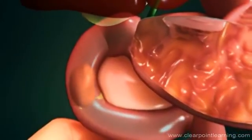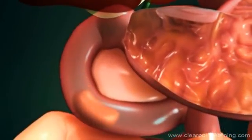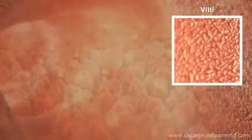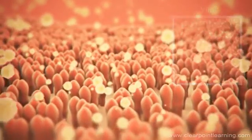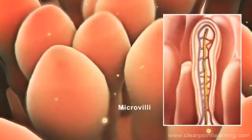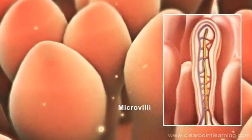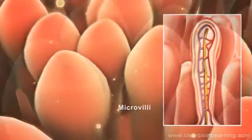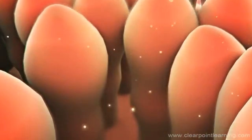Most digested food molecules, as well as water and minerals, are absorbed through the small intestine. The mucosa of the small intestine contains many tiny finger-like projections called villi, which on their surfaces are covered with microscopic projections called microvilli. These structures create a vast surface area through which nutrients can be absorbed.